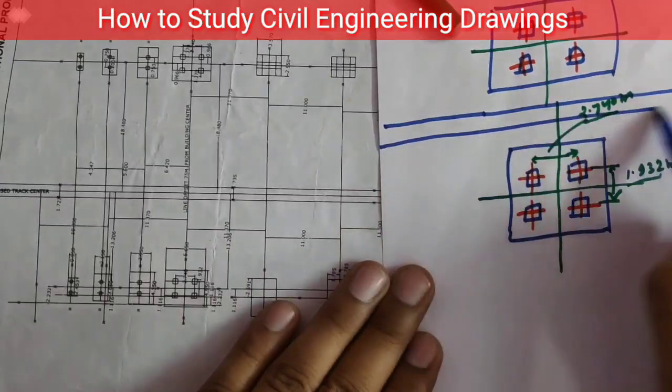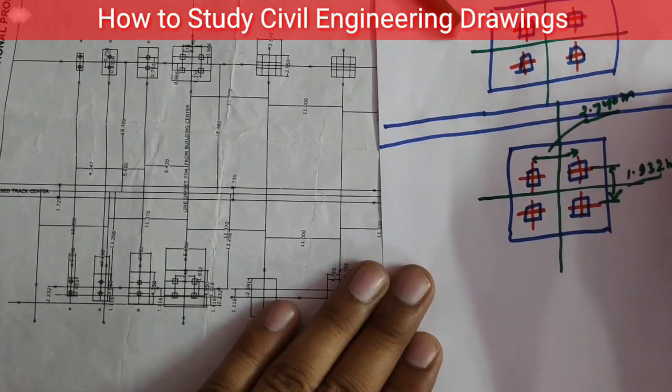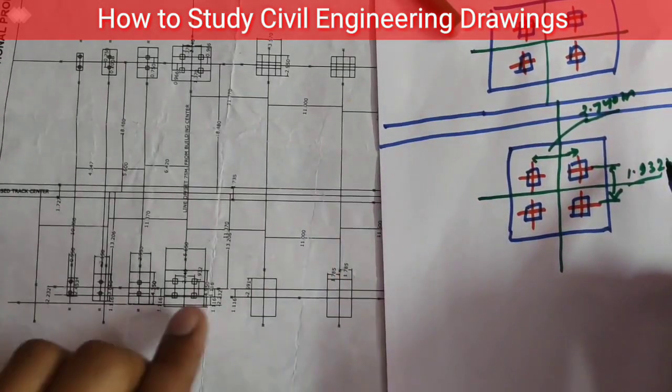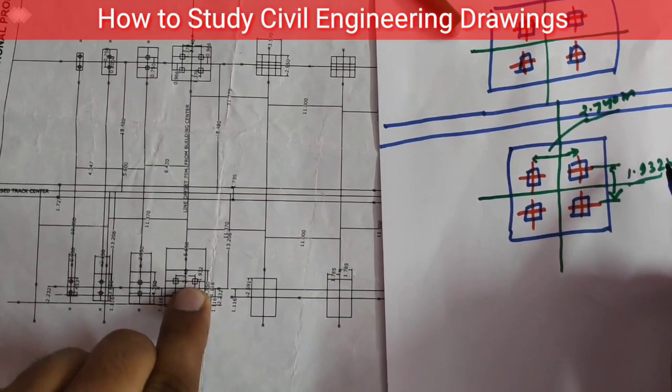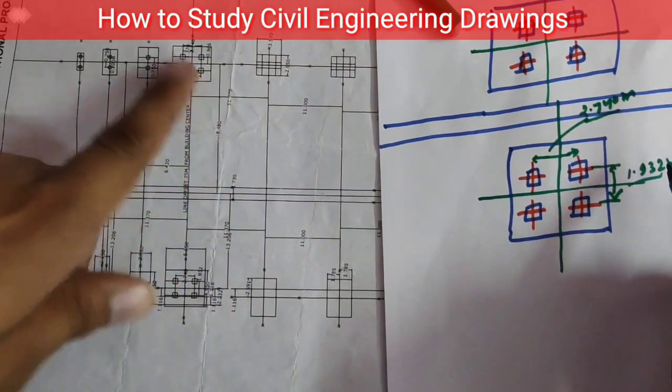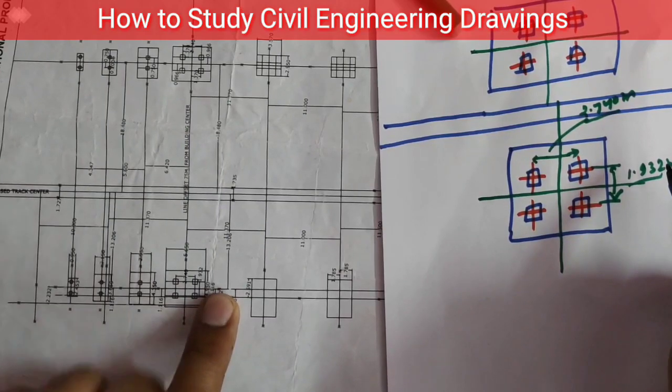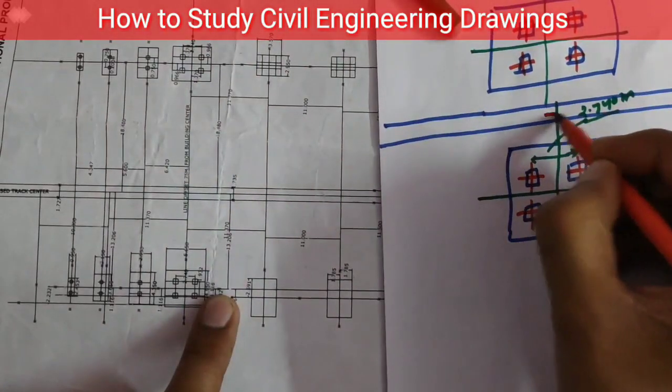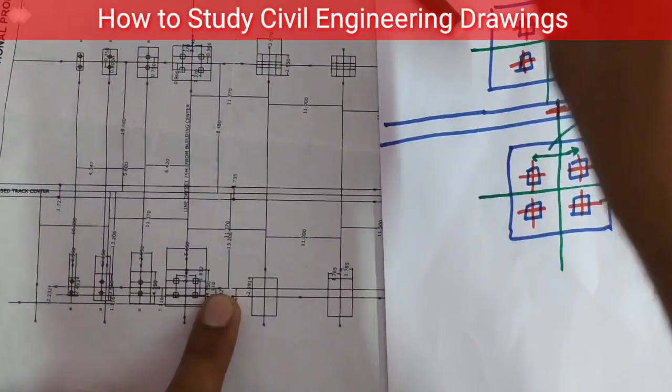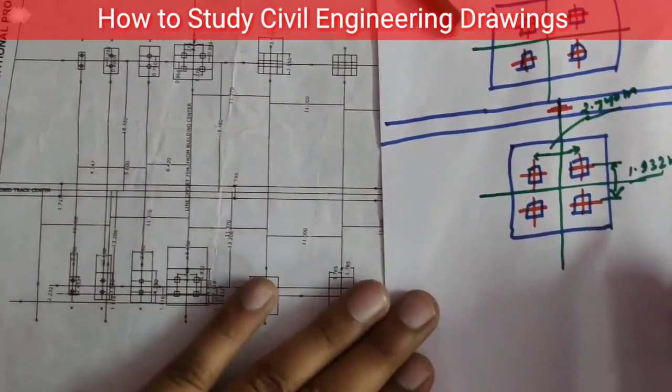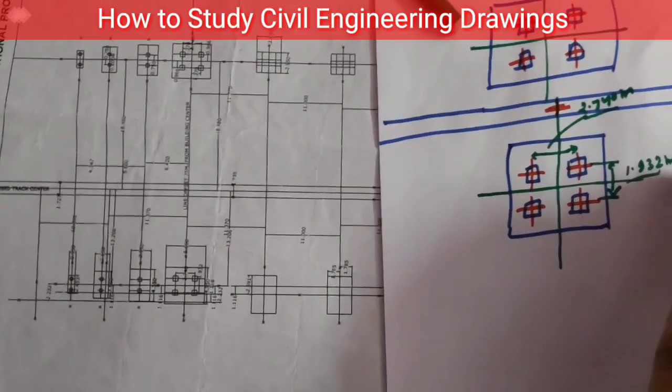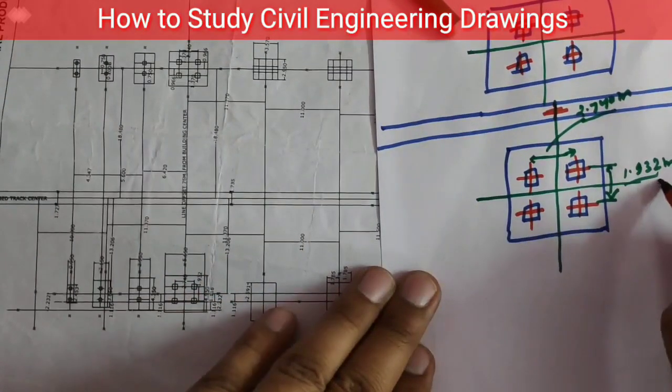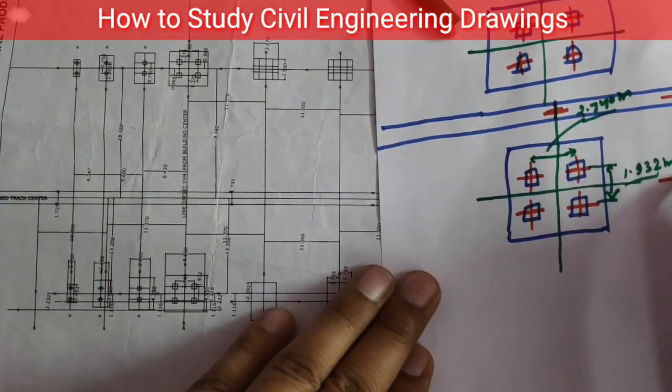Now you see from the center of this to center of this we have a dimension, and the rail center will be here.